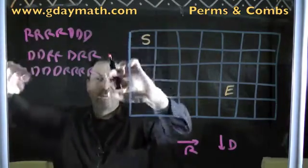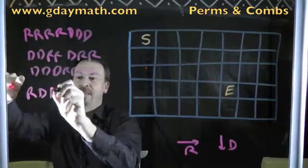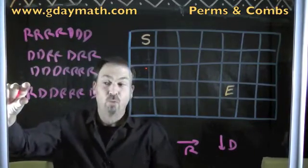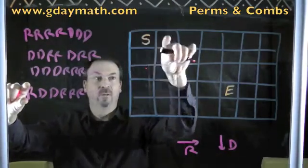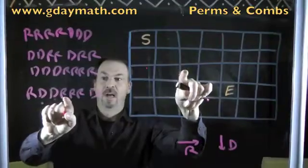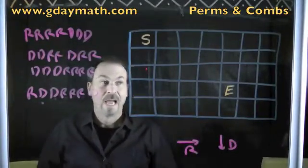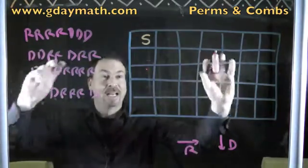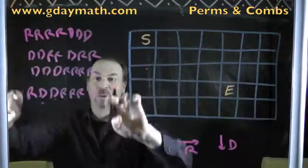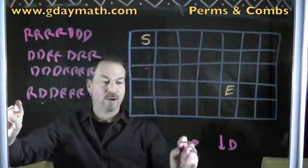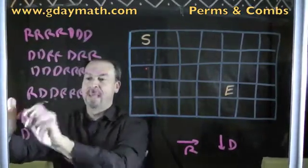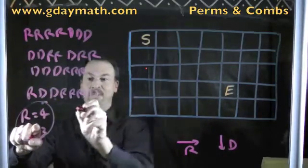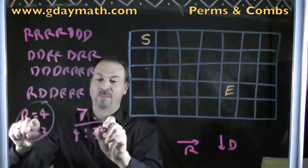If I just wrote down some random combination of four R's and three D's — say right, down, down, right, right, right, down — that's four R's and three D's. Does that word really correspond to a path? Let's check: start, go right, then down, down, right, right, right, and down. That really is a path. And does every path really correspond to a word with four R's and three D's? You bet. So actually, this counting problem is really just the same question we've been dealing with all along: how many ways can we rearrange four R's and three D's?